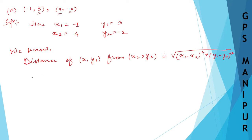So therefore, distance of (x1, y1), that is (-1, 3), from (x2, y2), (4, -2), is root over...